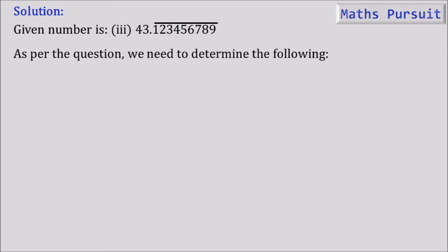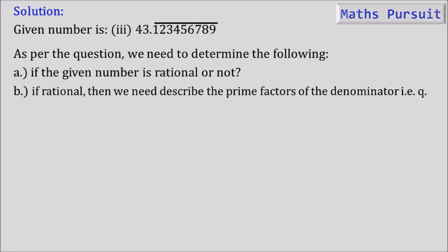The first point is if the given number is rational or not. And the second point is if rational, then we need to describe the prime factors of the denominator, that is Q. Because if a number is rational then definitely it would be of the form P by Q, and we need to find out the factors of Q.